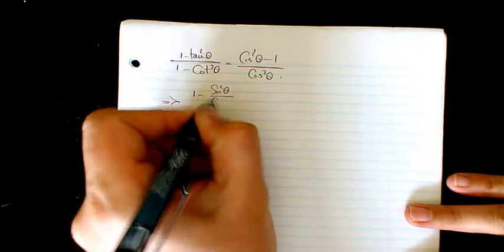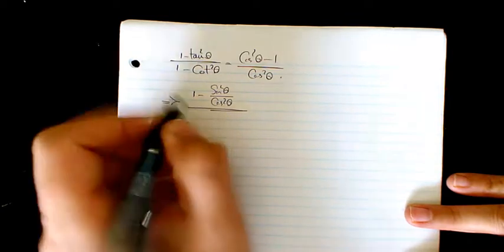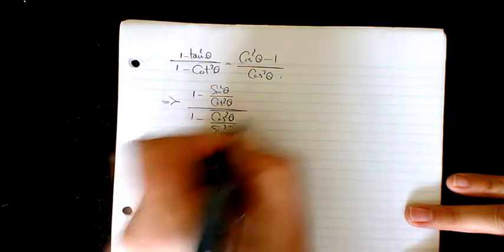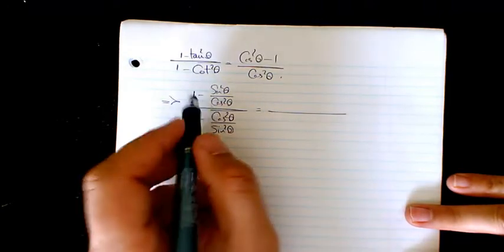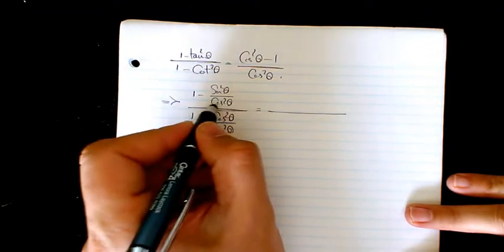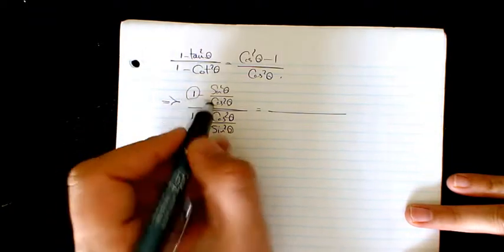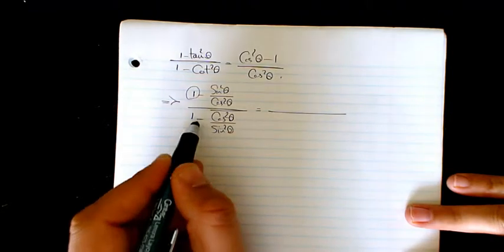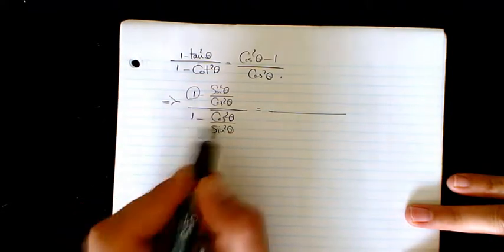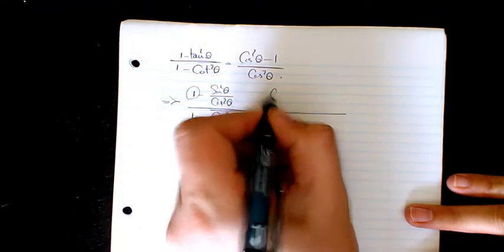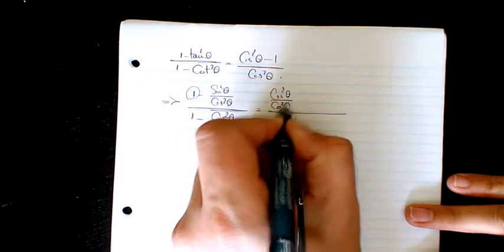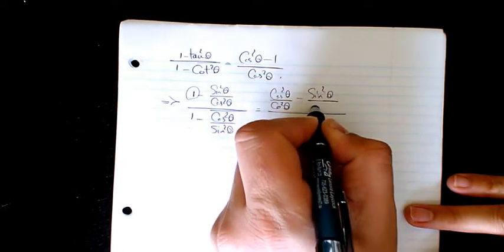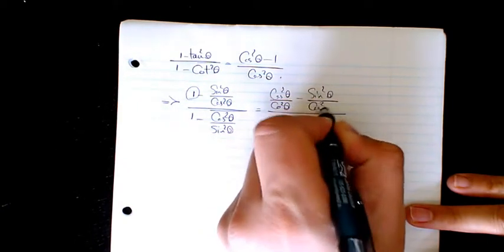...tan squared theta divided by cosine squared theta, and here I have 1 minus cosine squared theta divided by sine squared theta. What I can do is, instead of 1, I can write cosine squared over cosine squared to match it with this one, and here I can write sine squared divided by sine squared to match it with this one.